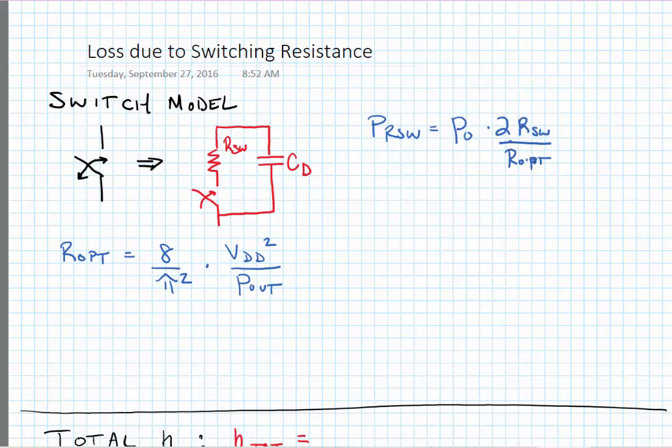Now we've already established for a class F power amplifier that ROPT is equal to eight over pi squared times VDD squared divided by P out. And if we want to achieve the same output power in the face of loss in the switch, we need to account for the loss in the switch by subtracting two times the switch resistance.